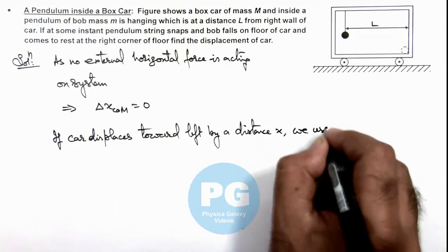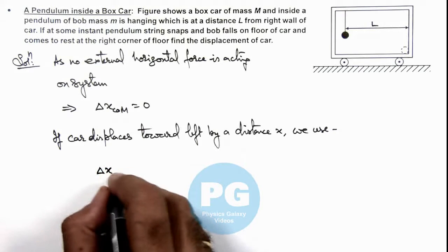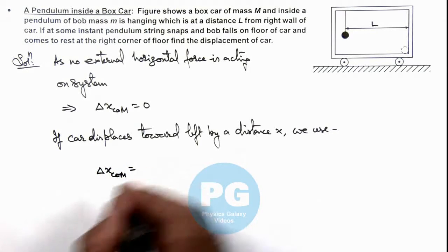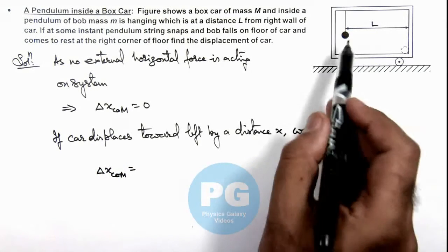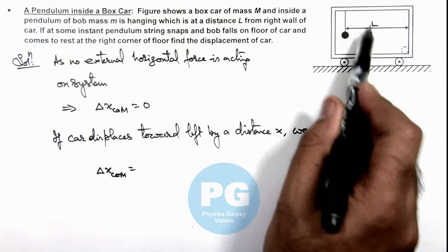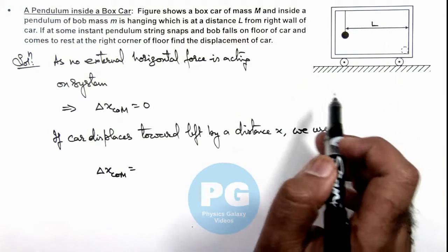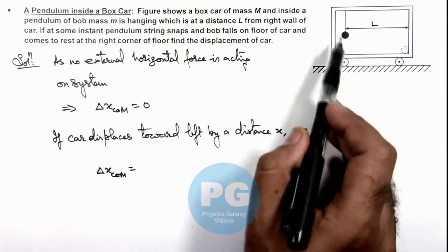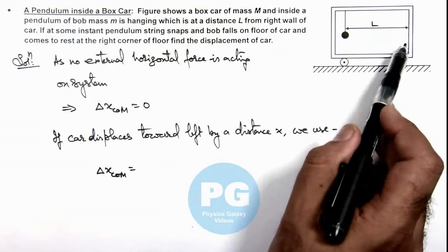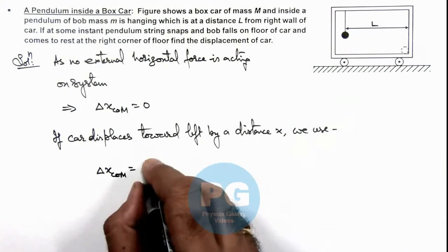We use delta x of center of mass equals zero. For the bob going toward right by distance L, and considering car displaces toward left by x, with respect to ground the displacement of bob will be L minus x.